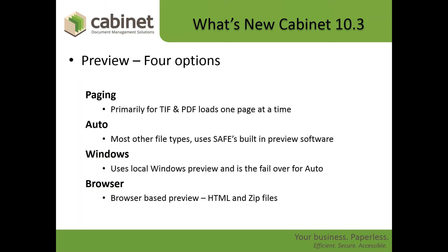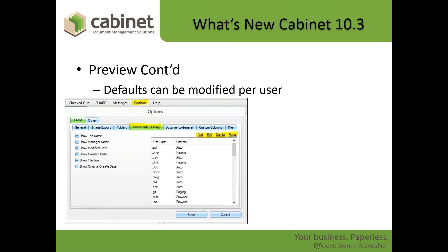The other three methods will download the entire document, and each of these have their own subtle pros and cons. If you're not using Paging, you're probably going to be using the Auto method, which is going to use the built-in software to preview those documents. It will identify what kind of document it is and preview it. There are going to be some document types that it will not preview, and in that case it goes into Windows mode, where it'll look at your local machine and see what software you have there that might be suitable for previewing that document.